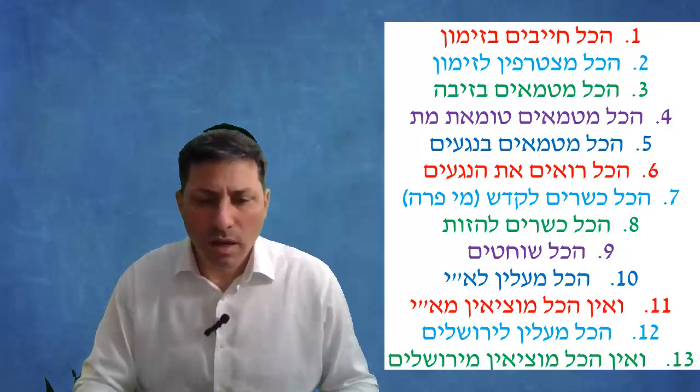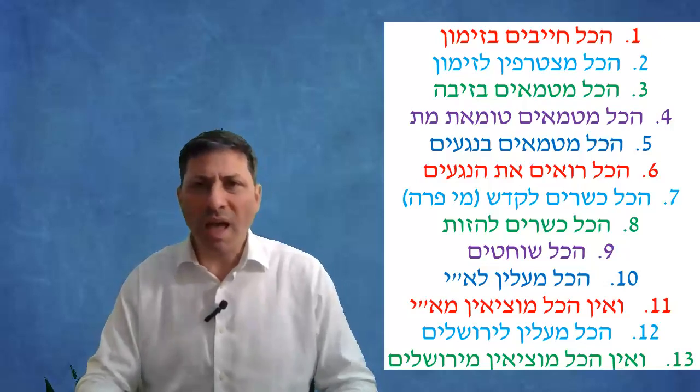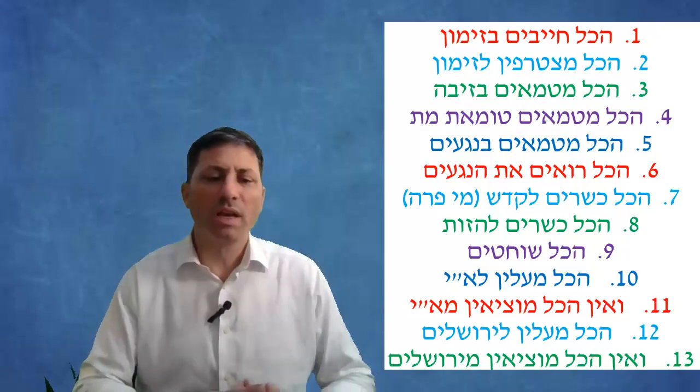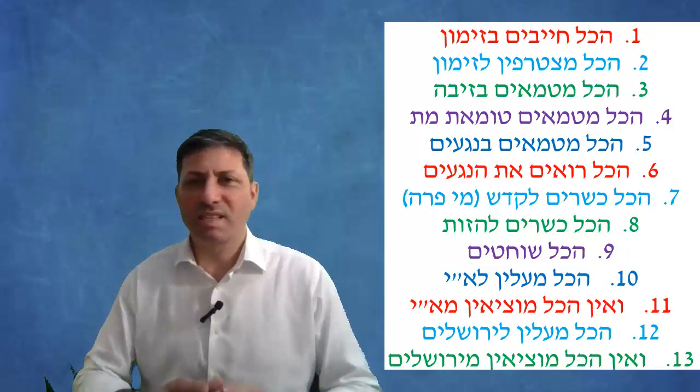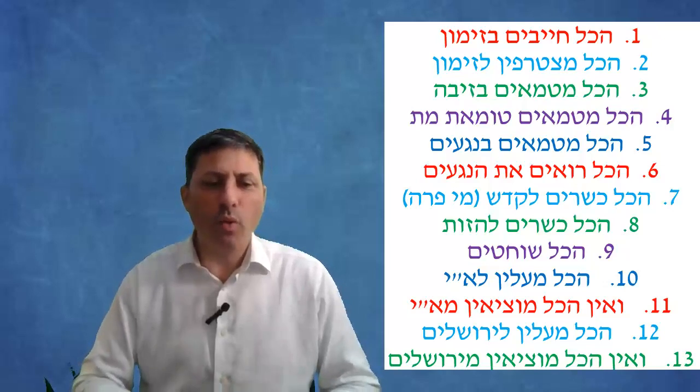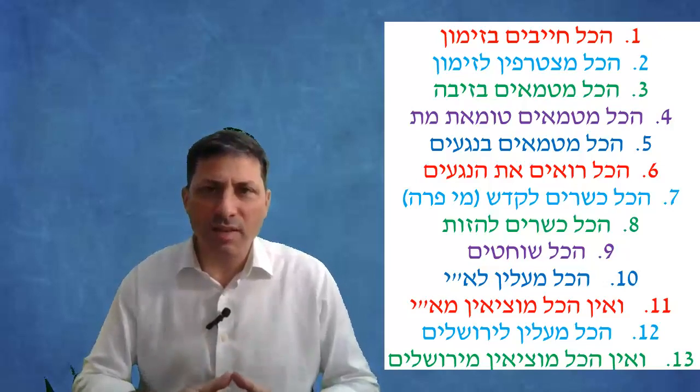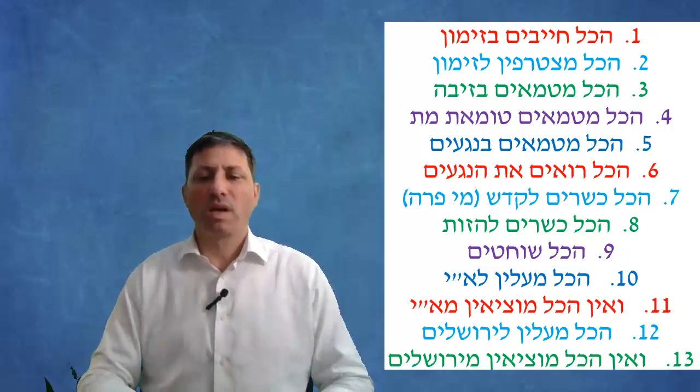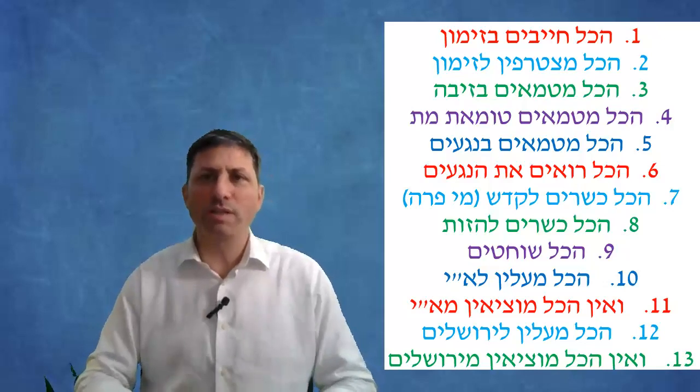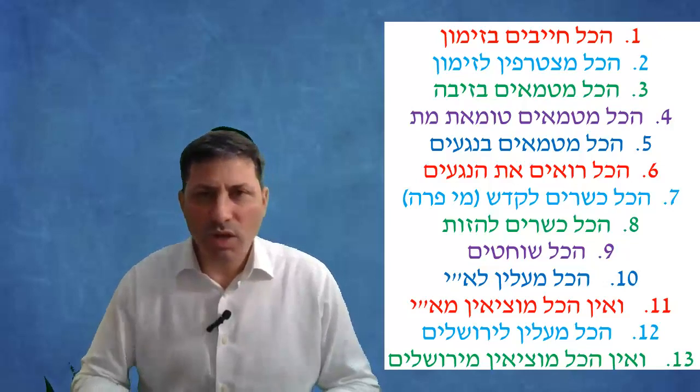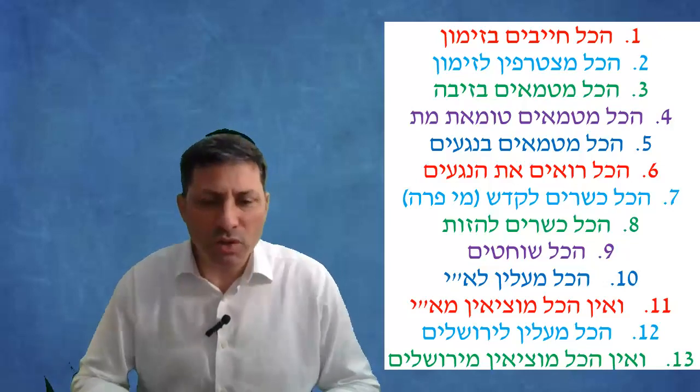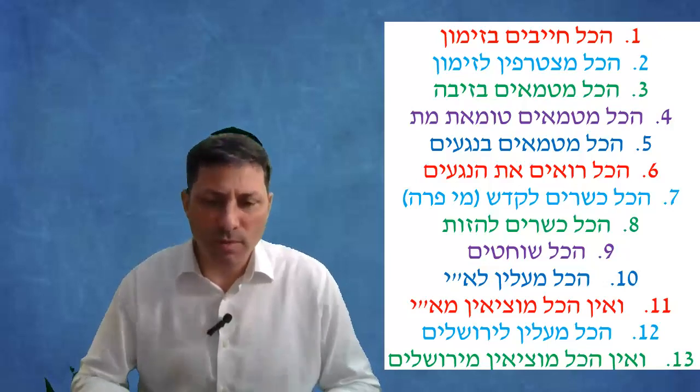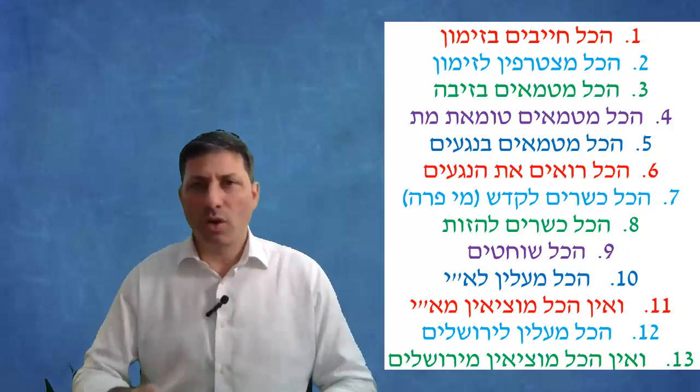Hakol malin la'aretz Yisrael - meaning you can force your family, your wife, to move to Eretz Yisrael. It comes to include a slave, that if he wants to sell the slave, the slave could say I want to be sold in Eretz Yisrael and he can force his master to do so. It says v'hakol yotzim l'chutz la'aretz - not everybody, you can't force anybody out of Eretz Yisrael to chutz la'aretz. So that comes to include a slave that ran away from Eretz Yisrael you can't force him out.